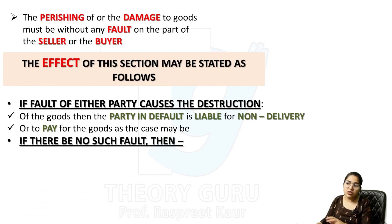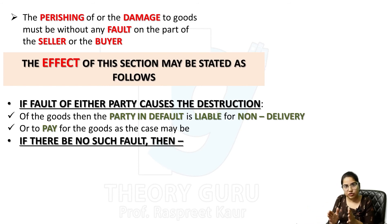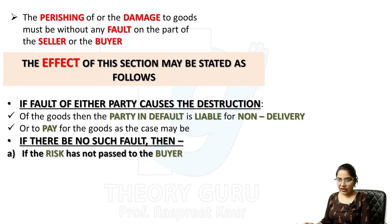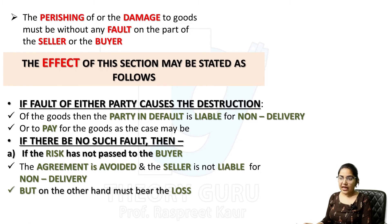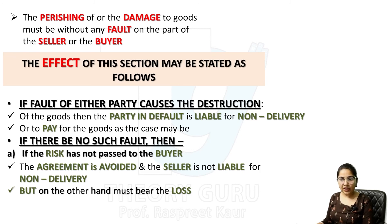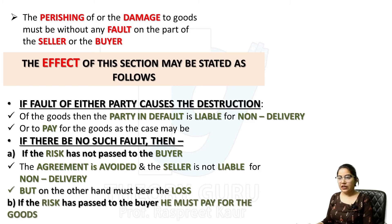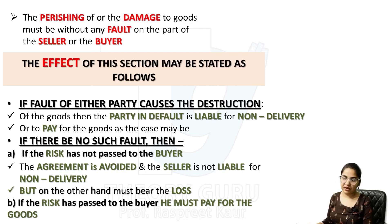But if there be no such fault — दोनों parties की तरफ से कोई गलती नहीं — तो loss कौन bear करेगा? If risk has not passed to the buyer, तो loss seller उठाएगा — seller losses के लिए liable है। लेकिन अगर risk pass on हो गया to the buyer, तो buyer loss face करेगा — he must pay for the goods।